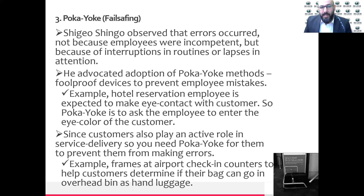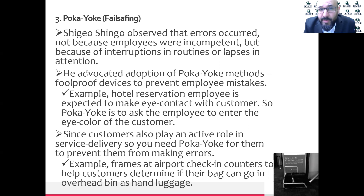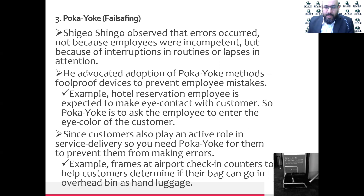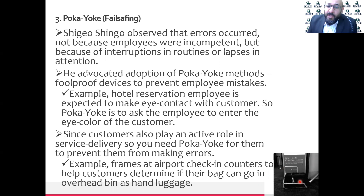Now there's another technique I want to go over: Poka-Yoke. This is an approach that prevents errors from happening the first time. There are ways to prevent mistakes from happening by creating tools to help educate the customer. For example, in the service industry, looking into the airport - they provide frames to help customers determine if their bag can fit in the overhead bin as hand luggage. There are a lot of applications. In the recycling bin, you'll see one bin with a circle opening, which means you recycle soda cans in something that looks like a circle.